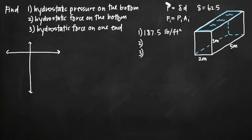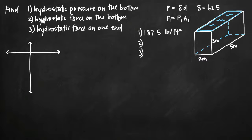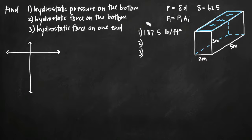When we talk about hydrostatic force, we're going to use the equation force equals pressure times area, but pressure and area are both related to a specific depth. To calculate hydrostatic force on the bottom, we're going to use the answer we got previously for hydrostatic pressure on the bottom of the tank. Because we're talking about the bottom of the tank in both cases, force on the bottom means pressure on the bottom times the area of the bottom.